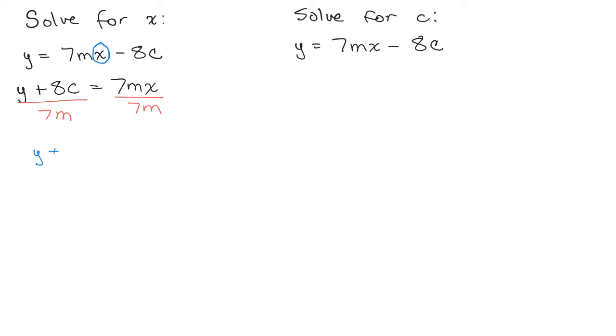And so now we've actually solved the equation for x. We have y plus 8c over 7m equals x, but I like to write it like this: x equals y plus 8c over 7m. So we've just solved the equation for x. All right. Now let's look over on the right-hand side.